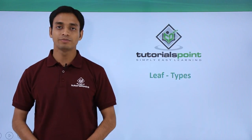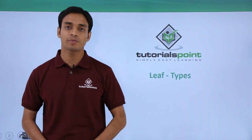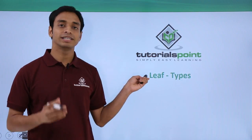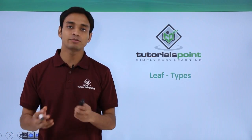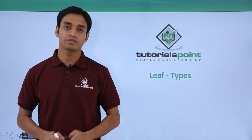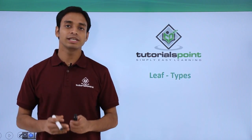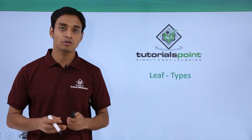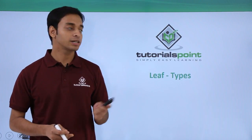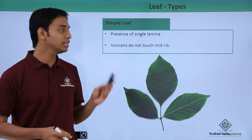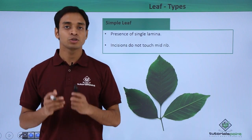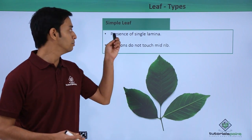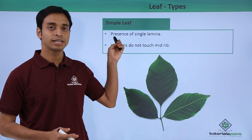Hello everyone, welcome to Tutorials Point. In this video, let us talk about the different types of leaves that can be observed. Mostly there can be two different types of leaves that have been found or discovered — those two types are the simple leaf and the compound leaf. So first, let us start a discussion with the simple leaf.